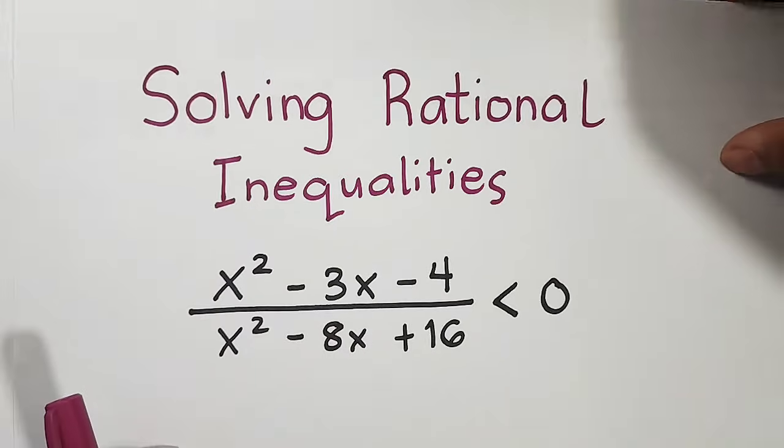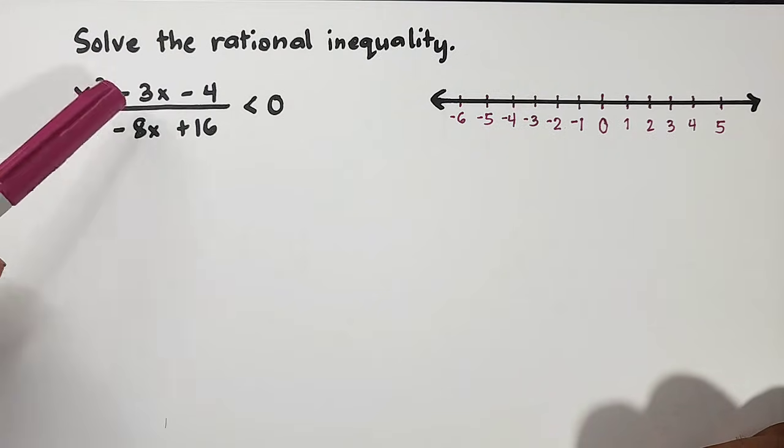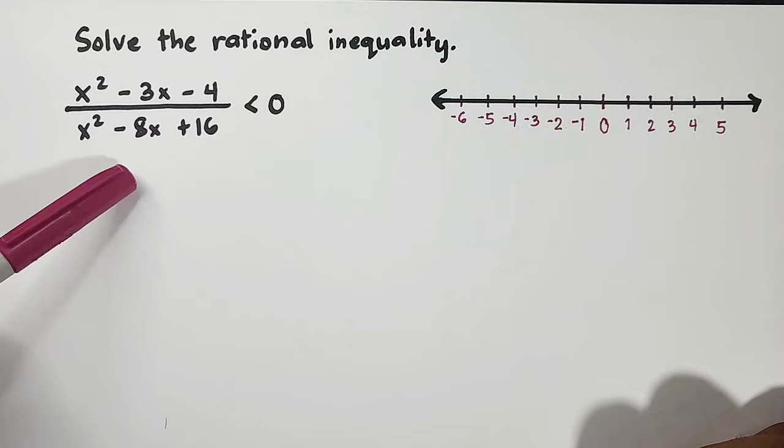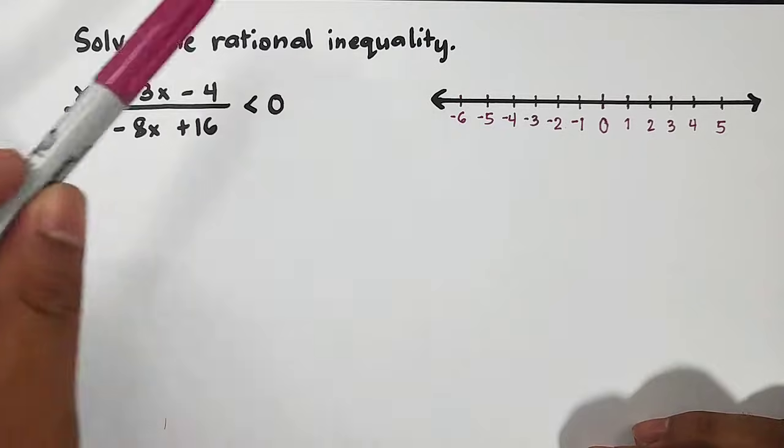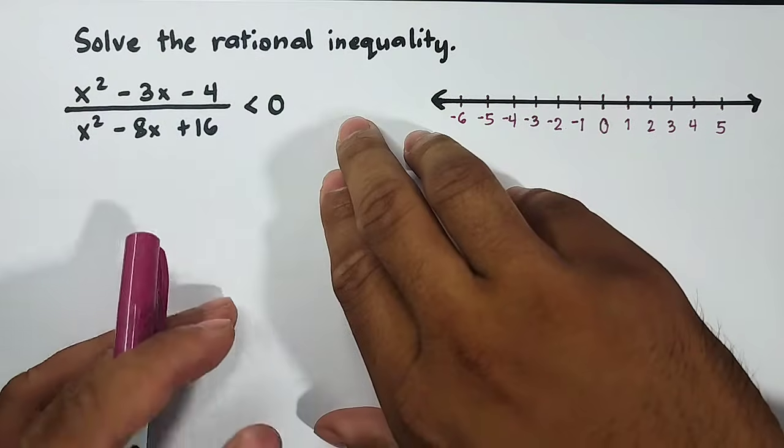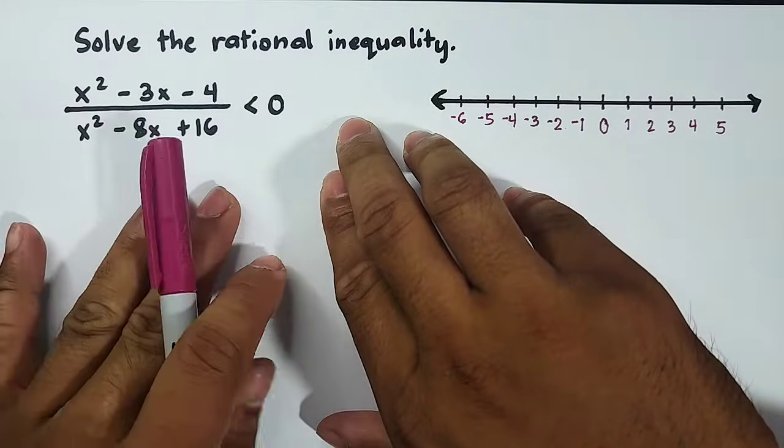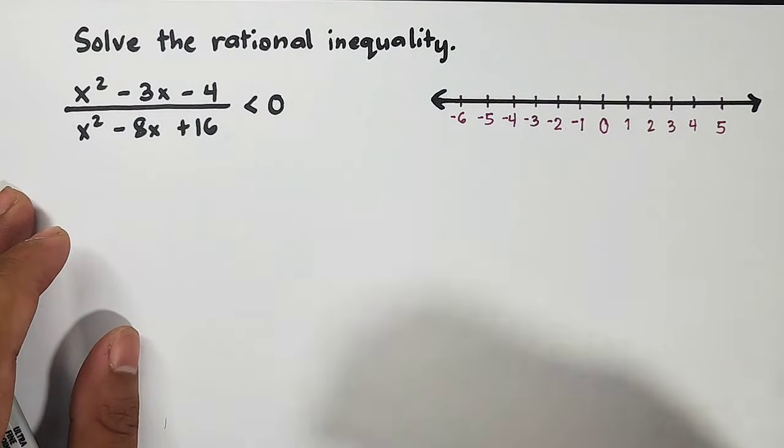Here's our example for this video where we are asked to solve the rational inequality (x² - 2x - 4)/(x² - 8x + 16) < 0. First, I need to secure whether your inequality is in general form, meaning your whole expression is on the left side or on one side while the other side is 0.